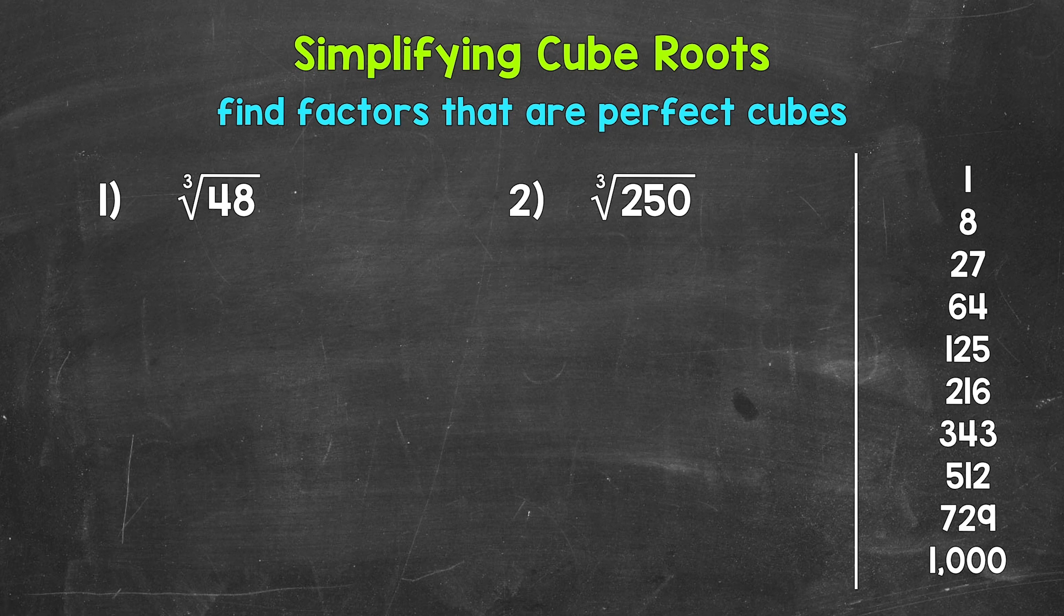Now 48 is not a perfect cube, so we're not going to get a nice clean-cut whole number for our answer. But we can simplify this cube root. We can break it down. We're going to do this by looking for factors of 48 that are perfect cubes, and then find their cube root. We will then pull that cube root out.